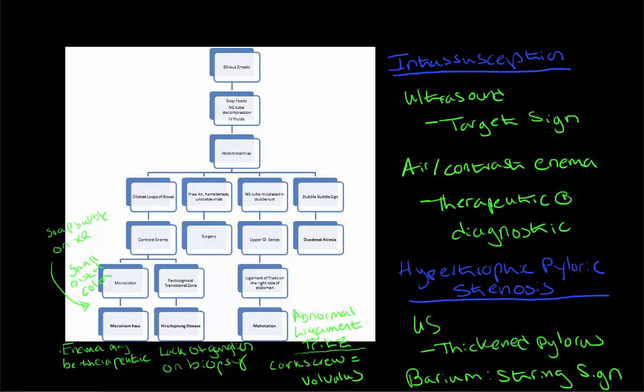So let's start off with intussusception. So if someone was to do an ultrasound, you would see something called the target sign, and that's kind of formed by having the smaller segment that's telescoped inside the larger segment. But usually what you would see is an air contrast enema, because that's both therapeutic and diagnostic.